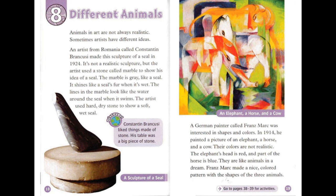Different Animals. Animals in art are not always realistic. Sometimes artists have different ideas. An artist from Romania called Constantin Brancusi made a sculpture of a seal in 1924. It's not a realistic sculpture, but the artist used a stone called marble to show his idea of a seal. The marble is grey, like a seal. It shines like a seal's fur when it's wet. The lines in the marble look like the water around the seal when it swims. The artist used hard, dry stone to show a soft, wet seal.